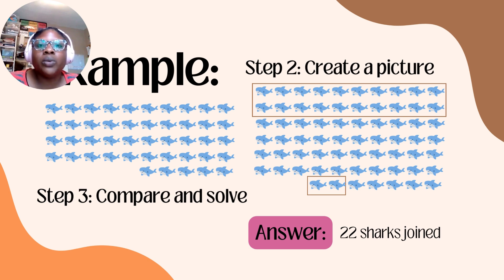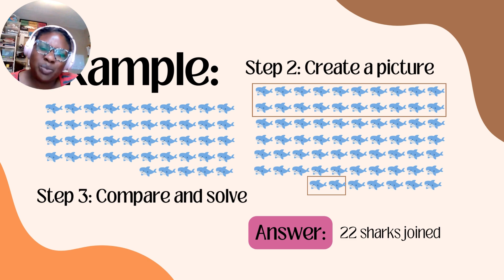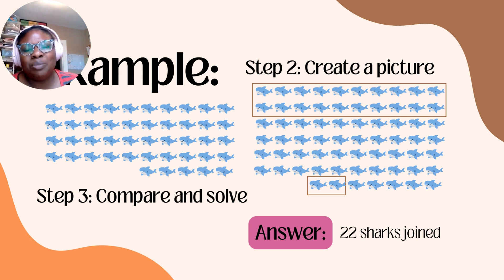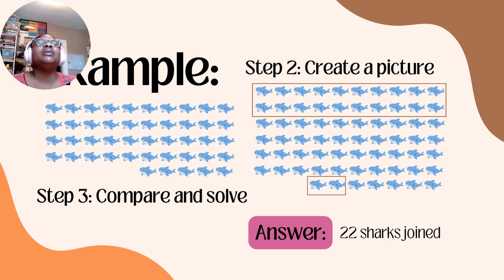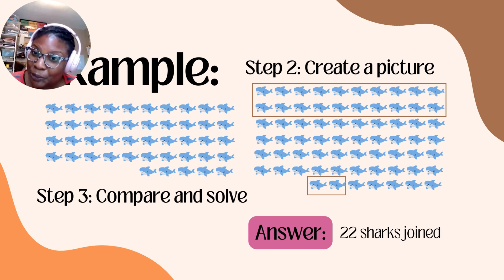So we know we had 45 first, and 67 altogether. How many more sharks did we have to add? Let's compare and solve. We're going to put a box around how many extra sharks joined — 22. That's it: 22 sharks joined.